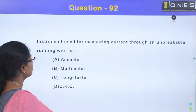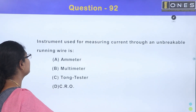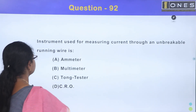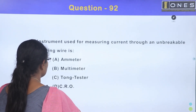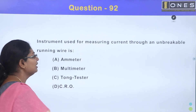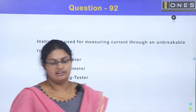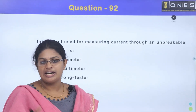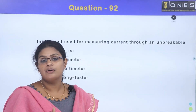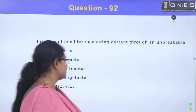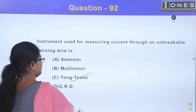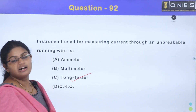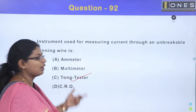Instrument used for measuring current through an untraceable running live wire: Option A, ammeter; Option B, multimeter; Option C, tone tester; Option D, CRO. For measuring current through a live wire with high current, we use a clamp meter.